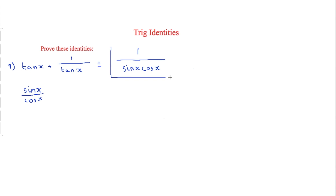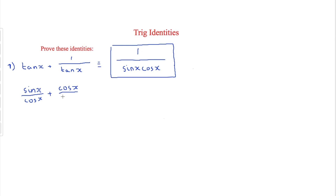The right hand side is always going to stay the same and we're basically going to make the left hand side equal the right hand side. Sometimes if it's much easier we would work on the right hand side, but normally it's just the left hand side equals the right hand side. One over tan x is therefore going to be equal to cos x over sin x as we're just flipping it around. This is also equal to cot x but that's for another video.